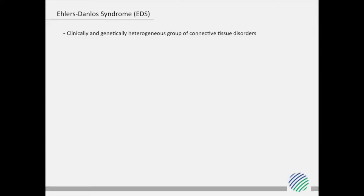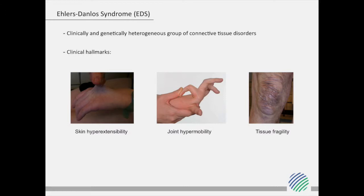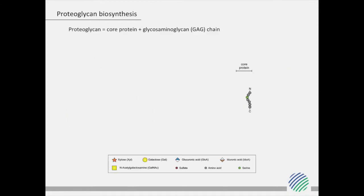The Ehlers-Danlos Syndrome, or shortly EDS, comprises a heterogeneous group of connective tissue disorders that are clinically hallmarked by a combination of skin hyperextensibility, joint hypermobility, and generalized connective tissue fragility. The latest EDS classification, known as the Vilfranche Nosology, recognizes six subtypes which are mainly caused by defects in fibrillar procollagens or collagen-modifying enzymes. Over the years, several additional rare EDS and EDS-like variants have been clinically delineated and diverse molecular causes have been identified. One of the emerging causes of EDS are defects in proteoglycan biosynthesis.